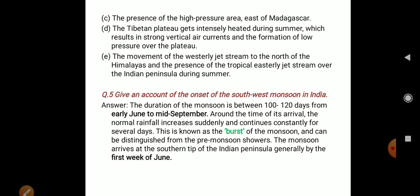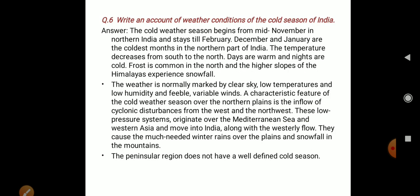Around the time of its arrival, the normal rainfall increases suddenly and continues constantly for several days. This is known as the burst of the monsoon, and can be distinguished from the pre-monsoon showers. The monsoon arrives at the southern tip of the Indian Peninsula generally in the first week of June.